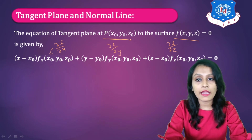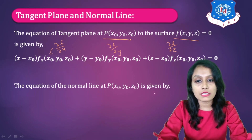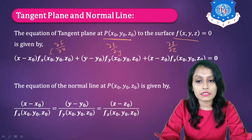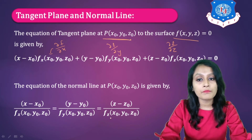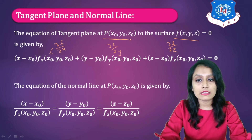The equation of normal line at point (x₀, y₀, z₀) is given by: (x − x₀) / Fx at (x₀, y₀, z₀) = (y − y₀) / Fy at (x₀, y₀, z₀) = (z − z₀) / Fz at (x₀, y₀, z₀). You have to apply these two formulas to find the equation of tangent plane and equation of normal line.